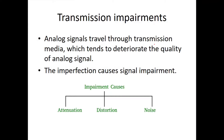Analog signals travel through transmission media, which tend to degrade the quality of the signals. The imperfection causes signal impairments. We are going to discuss about three types of impairments: attenuation, distortion, and noise.